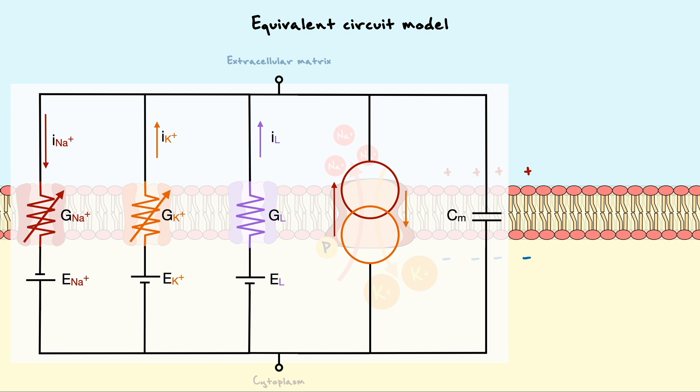To do so, we will use our circuit model to arrive at equations that describe the behavior of the membrane potential as a function of both time and space. Along the way, we will discuss three important passive membrane properties. Passive membrane properties are intrinsic properties of the neuron that influence how the membrane potential of the neuron will change in response to a current injection as a function of time and distance.